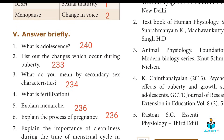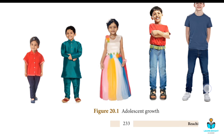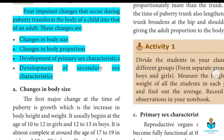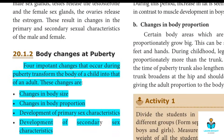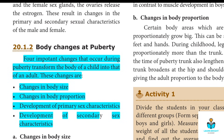Second question: List the changes which occur during puberty. The answer is on page number 233. The body changes at puberty — there are four important changes that occur during puberty, including development of secondary sex characteristics.